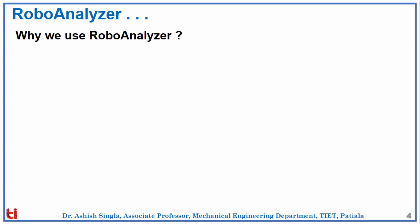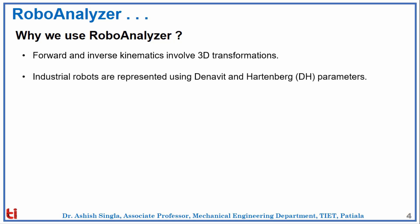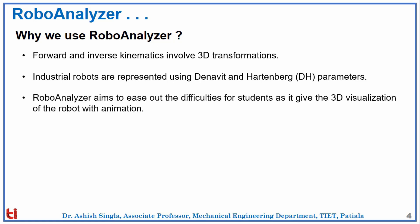Why do we use RoboAnalyzer? It is difficult for students to understand forward and inverse kinematics initially. This is because forward and inverse kinematics involve 3D transformations. Industrial robots are represented using Denavit-Hartenberg (DH) parameters, which are a bit difficult to perceive and visualize in 3D.